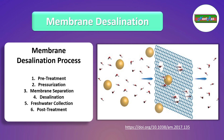Freshwater collection: on the other side of the membrane, the fresh water which has passed through is collected. This fresh water is now significantly reduced in salt content and is suitable for various purposes such as drinking, irrigation and industrial uses. Then post-treatment: after desalination, the fresh water might undergo post-treatment to adjust its pH, or it may need to be remineralized, to ensure its quality meets the desired standards.